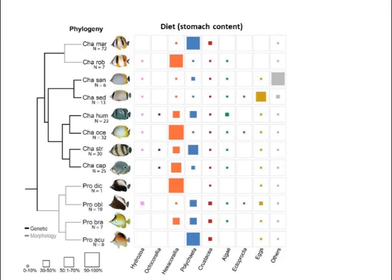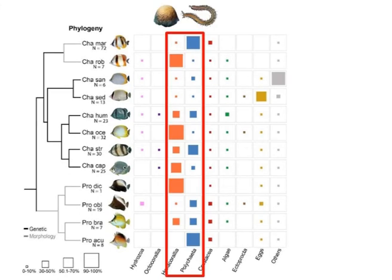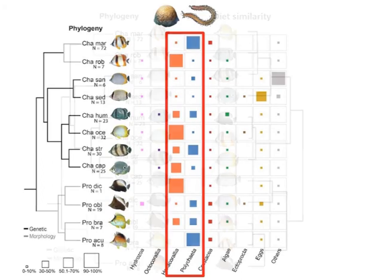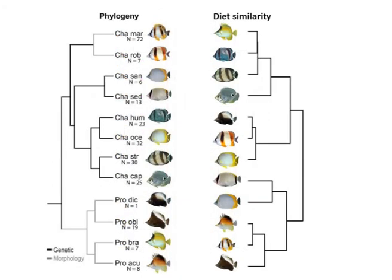Our results showed that most of these Atlantic and Eastern Pacific species have a generalist diet, feeding mainly on cnidarians and polychaetes. But almost all closely-related species showed a different diet.